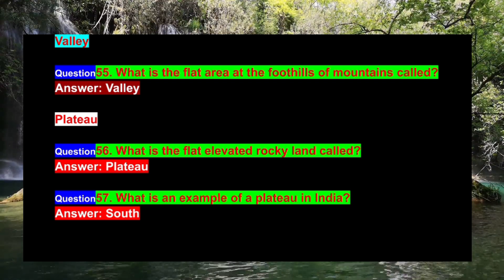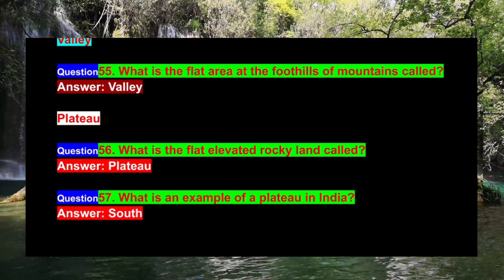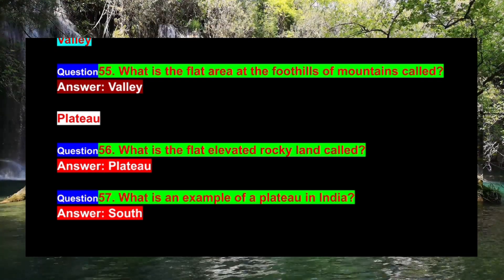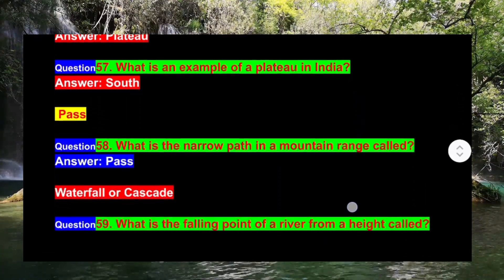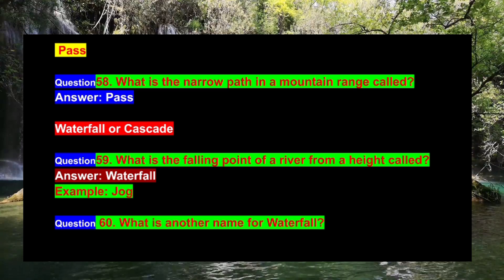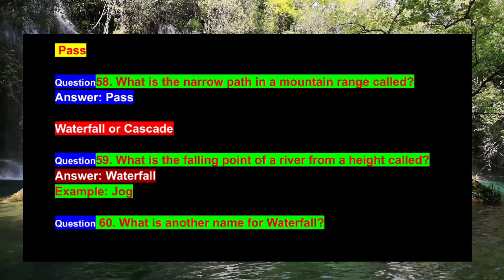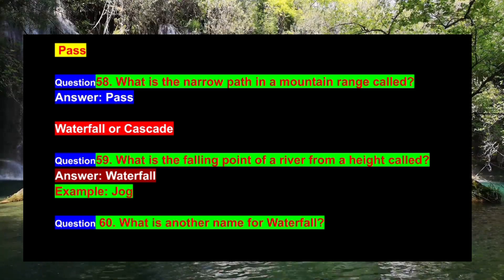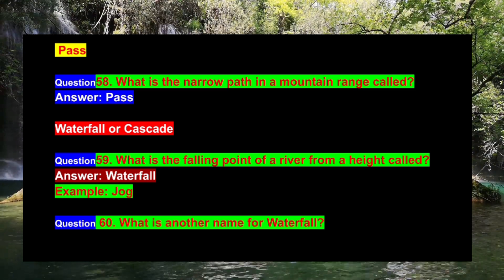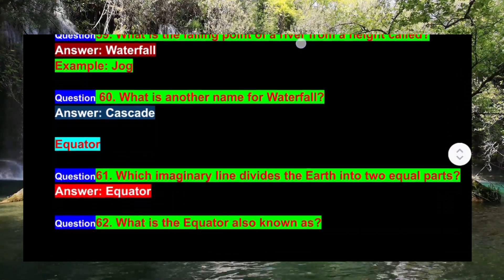Question 56: What is the flat, elevated, rocky land called? Answer: Plateau. Question 57: What is an example of a plateau in India? Answer: South — the Deccan Plateau. Question 58: What is the narrow path in a mountain range called? Answer: Pass. Question 59: What is the falling point of a river from a height called? Answer: Waterfall. Example: Jog.